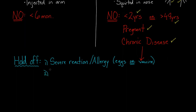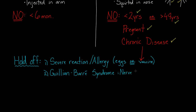Another group you might want to hold off on is people with Guillain-Barré syndrome. Guillain-Barré syndrome is a disease of the nerves that causes muscle weakness. There is a known relationship between people getting Guillain-Barré and the flu vaccine, which is why we always want to ask patients about it. If they have Guillain-Barré, I would hold off on giving the vaccine in most circumstances.